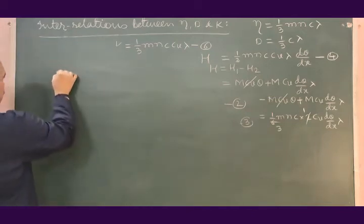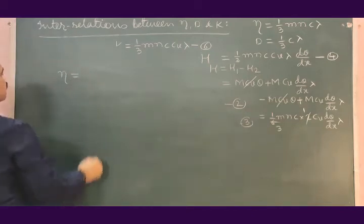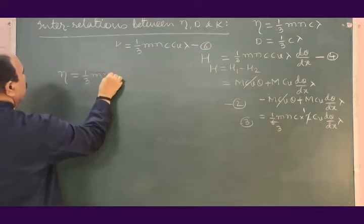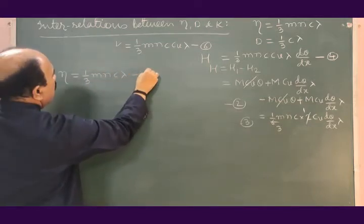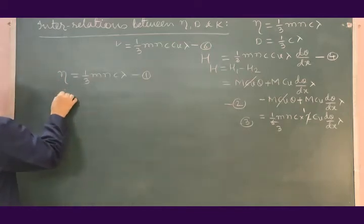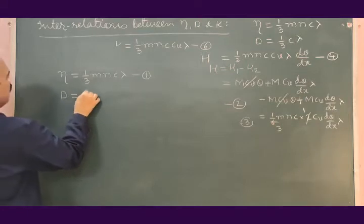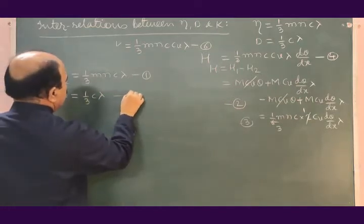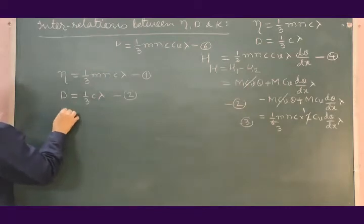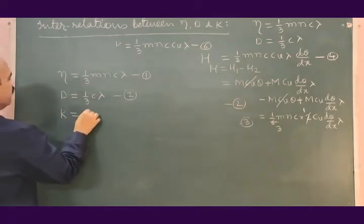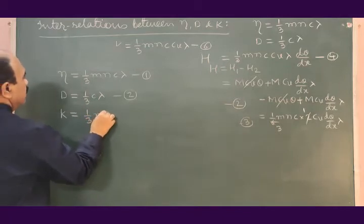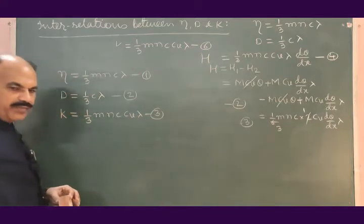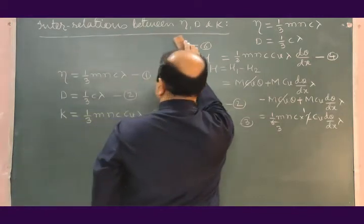We know that the coefficient of viscosity of a gas is given by eta = (1/3) mn·c·lambda, equation number 1. Diffusion D is given by (1/3) c·lambda, equation number 2. And the thermal conductivity K is given by (1/3) mn·c·cv·lambda, equation number 3.